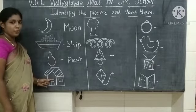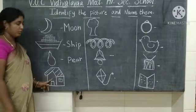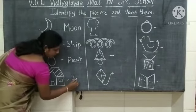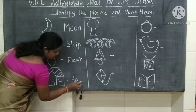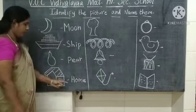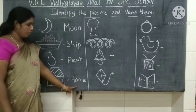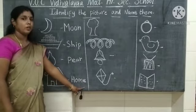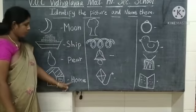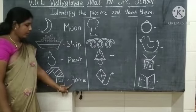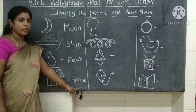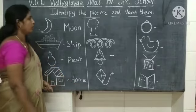What picture is this? This is a home. What is the spelling of home? H-O-M-E — home. What picture is this? This is a home. What is the spelling of home? H-O-M-E — home.